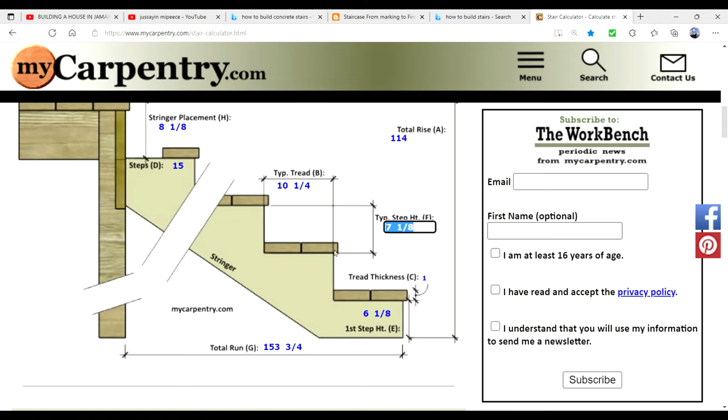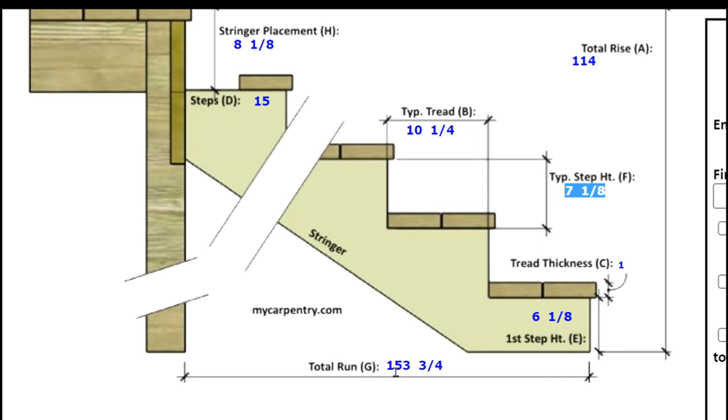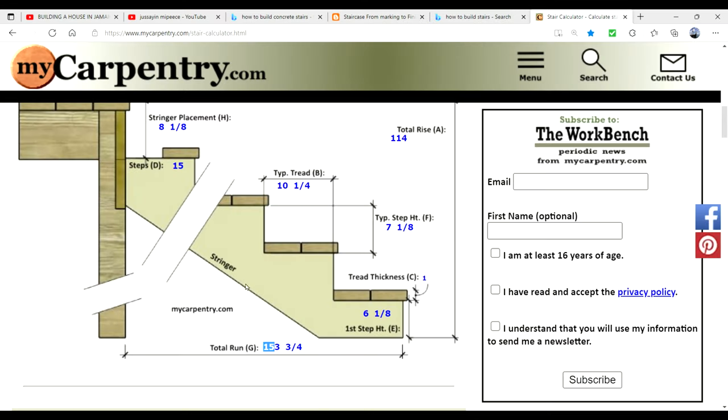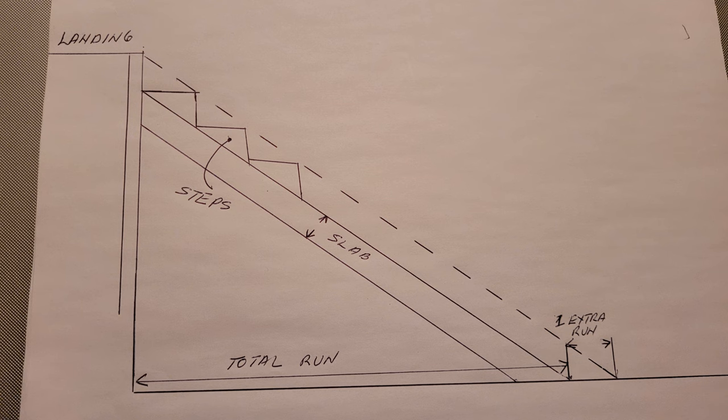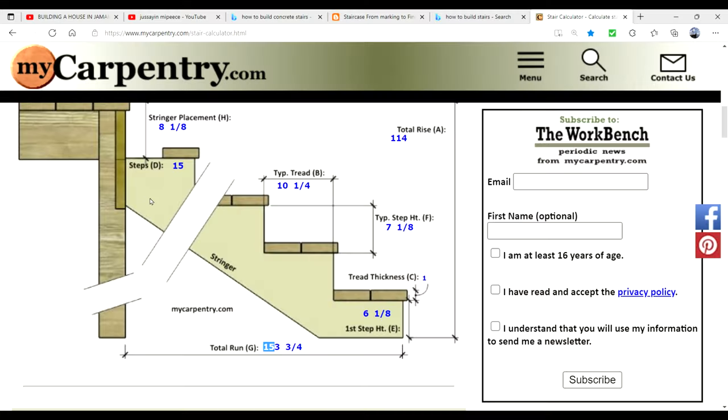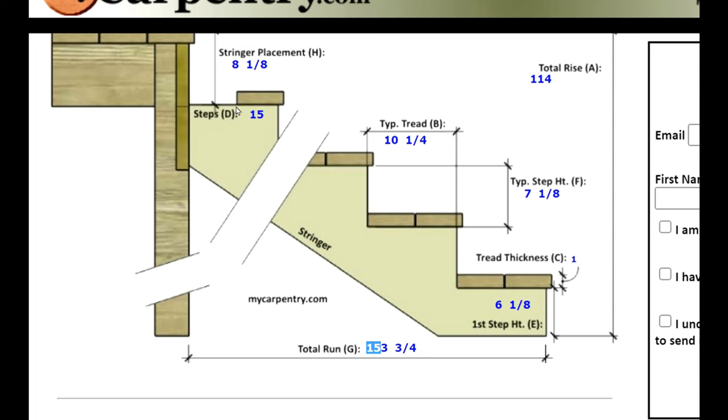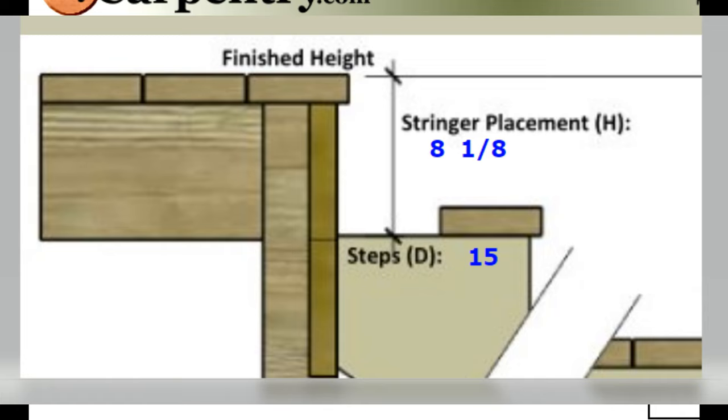Now the total length of the stringer according to this is 153 and 3 quarter. And let us not forget that the stringer is going to be around 4 inches thick. And the distance between the landing and the last or the top step is what is called the stringer position or stringer placement. So that is what's called the finished height.